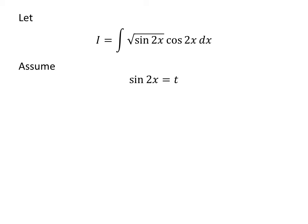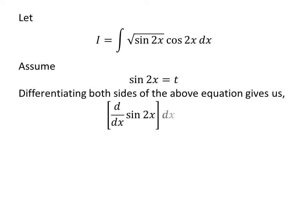Let us apply the substitution method to solve the integral. Assume sine of 2x is equal to t. Taking the differential of both sides gives us the derivative of sine of 2x with respect to x times differential of x is equal to differential of t.